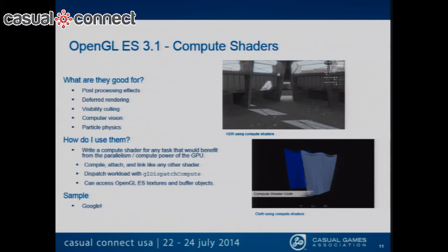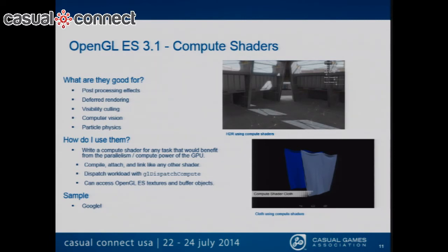You can think of Compute Shaders as grids of work. You pass in an X, Y, Z value for the number of work groups, which is the first level of a batch you're going to run. Each work group has a set number of threads that you define in the shader. Each instance of a thread in a work group can reference itself, and you can use that as an index to know where you want to write. So if you have a texture and you're doing a full image post-processing effect, you'd say this work group is going to work on this section. Anything that can take advantage of the parallelism of the GPU architecture is what you want to use Compute Shaders for. They can also access any OpenGL ES textures and buffer objects.